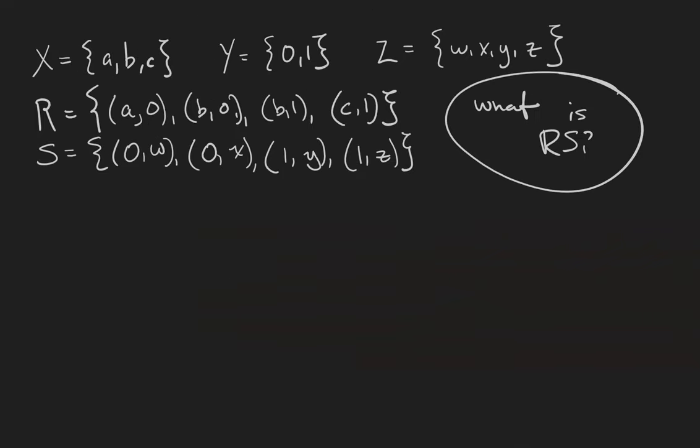Let's suppose that we have the set {A, B, C} called X, the set {0, 1} called Y, and Z is the set {W, X, Y, Z}. R relates A to 0 and B to 0, B to 1, and C to 1. S relates 0 to W, 0 to X, 1 to Y, and 1 to Z. So we would like to know what is the composition RS?